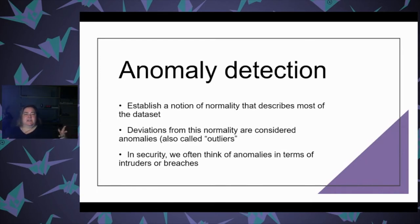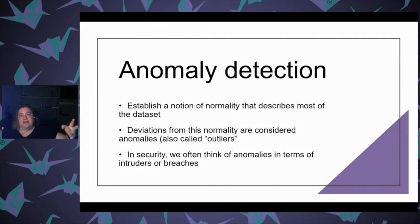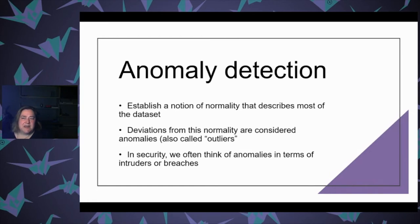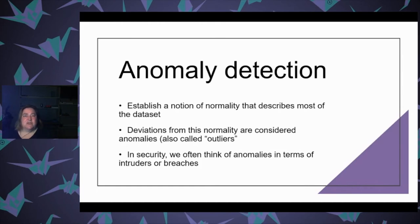To do anomaly detection, you have to decide what you consider normal. If you have something that deviates from normal — not even necessarily bad — you're going to call that an outlier. In security, unusual behavior is not necessarily bad, but it correlates very highly with things that you want to detect and prevent, like fraud and other things. Anomalies might very often mean that you've got an intruder or another kind of breach.